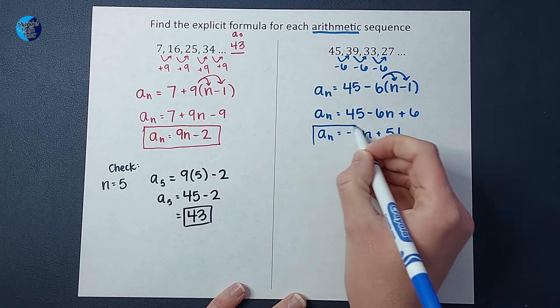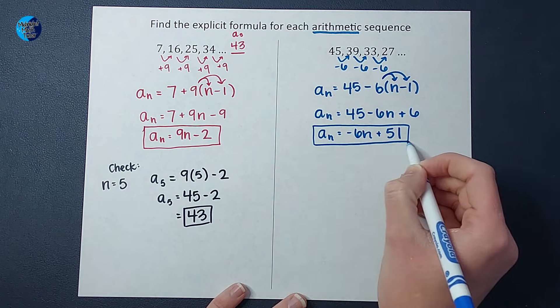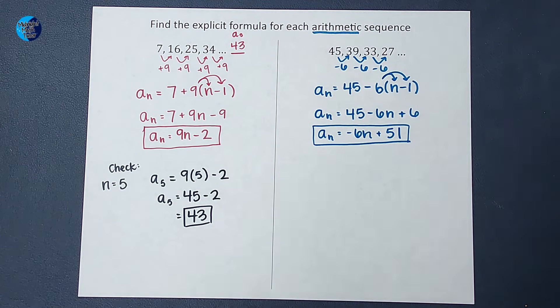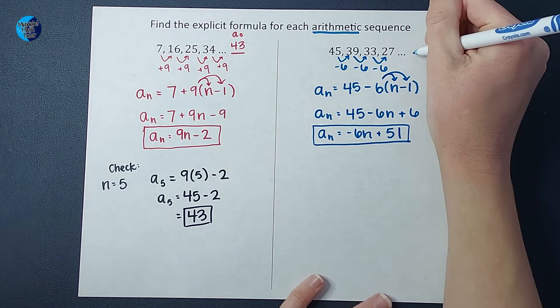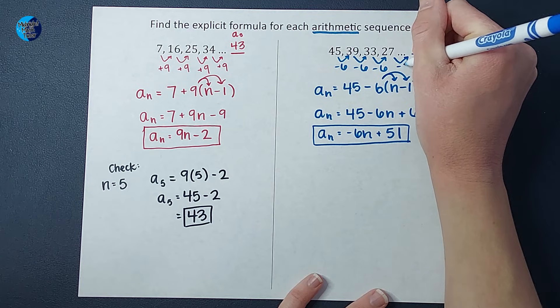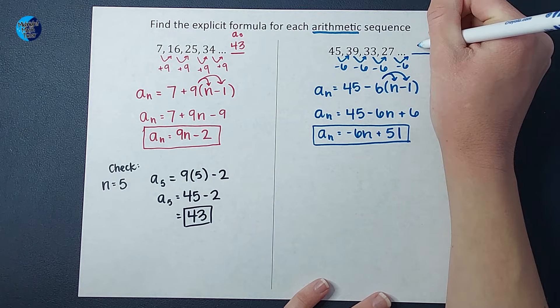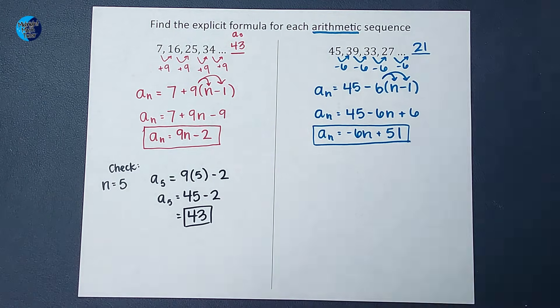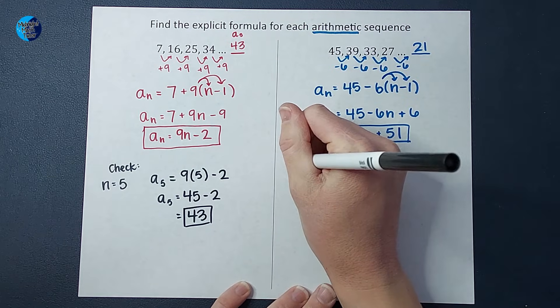And continuing on, we are going to have negative six n plus 51. Look at that, guys. I know you want to check it. I could just feel those vibes coming. So let's see if we figure out the next term this way, it would be 21, right? Let's make sure that our equation gets us 21. And then I'm feeling confident that we can plug in whatever number we want.